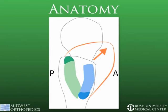The gluteus minimus, seen in shades of blue, has a capsular head shown in light blue and a long head shown in dark blue. Both function in a parallel line with the hip joint, similar to the posterior aspect of the gluteus medius. With this understanding, endoscopic repair of gluteus medius tears should focus on recreating the anterior and middle portions of this tendinous insertion.